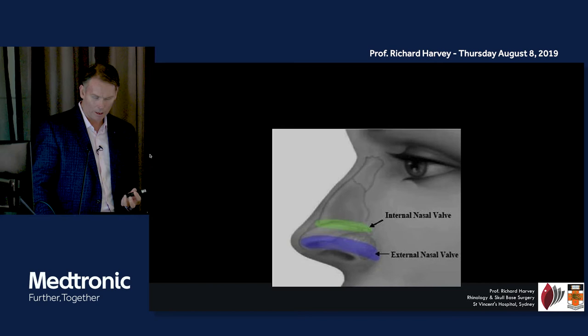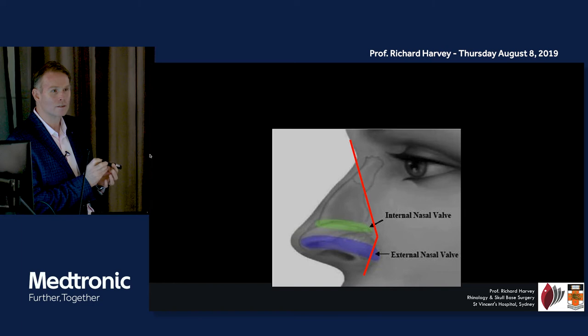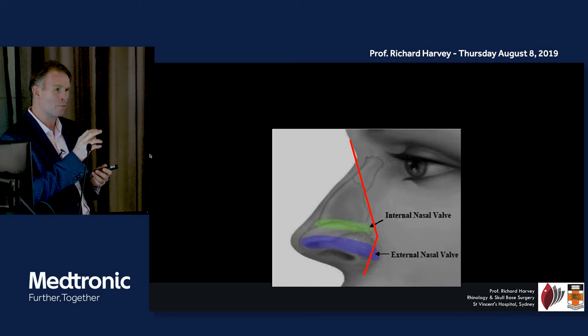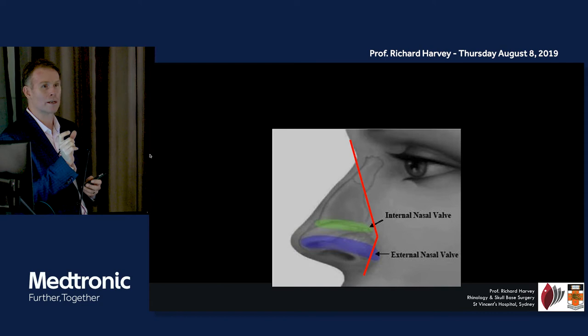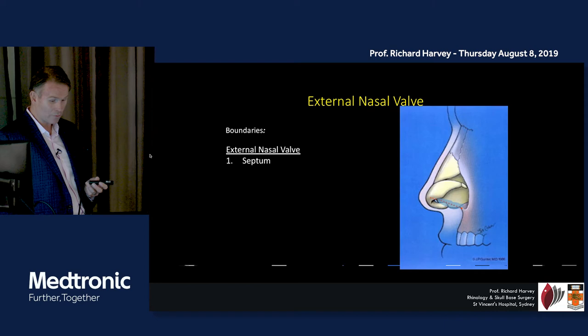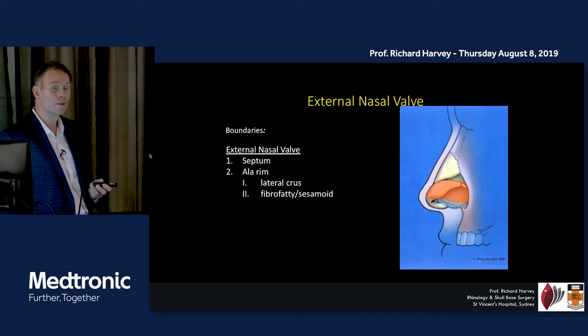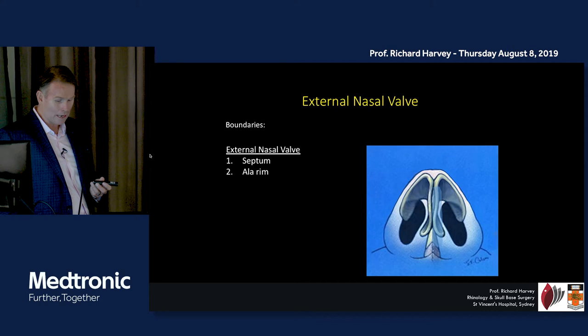Going back to this area — we've forgotten about the whole cartilaginous part of the nose that sits on top. There's a tendency for people to put their speculum in, see the turbinate and septum, and that's their assessment. But in people who complain of nasal blockage, it's important to assess the front two centimetres of the nose, because this is where we have a cartilaginous doorway often referred to as the nasal valve — the entrance to the nose. The external nasal valve is made up of the septum, the alar, the lateral crus, and some fibro-fatty tissue.